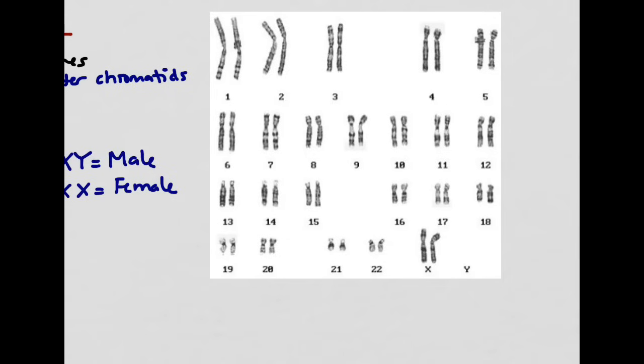If we look at this other person's karyotype, we can see that their X and Y chromosomes look a little bit different. Here, we can see that they have two X chromosomes and no Y chromosomes. And so this tells us that this person is female.